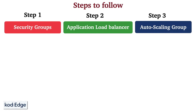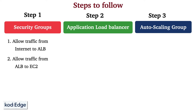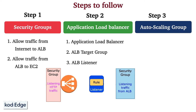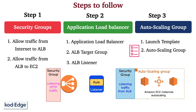In each step, we are going to create multiple resources. In Step 1, the first security group will allow traffic from the internet to the Application Load Balancer, and the second will allow traffic from the ALB to EC2. In Step 2, we create the ALB along with the target group and listener. In Step 3, we create the launch template and Auto Scaling Group. By the end, you will have a robust and scalable infrastructure ready to handle traffic.